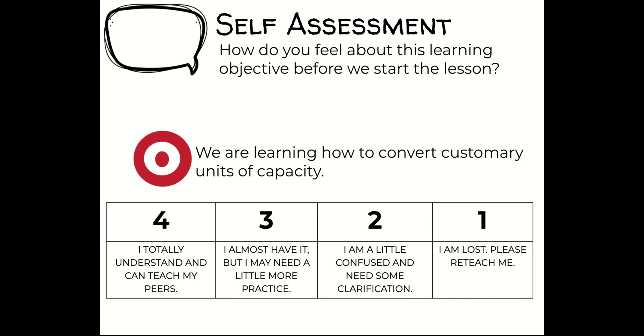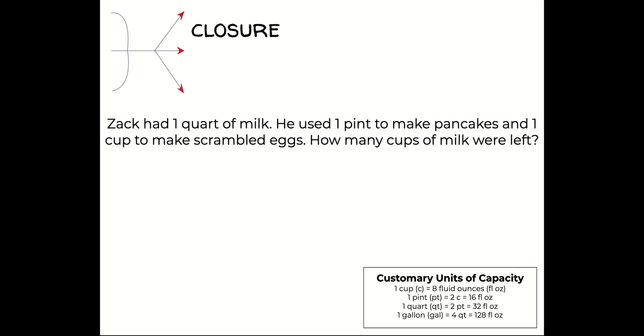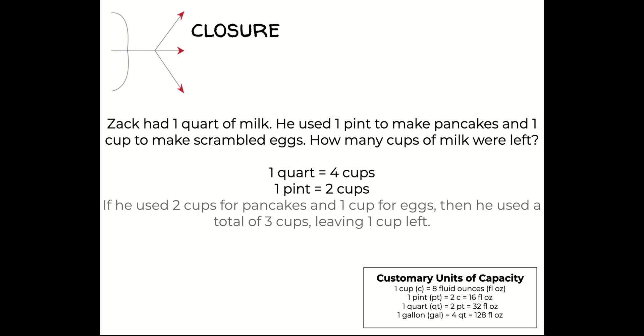Let's try this one before we close the lesson. Zack had one quart of milk. He used one pint to make pancakes and one cup to make scrambled eggs. How many cups of milk were left? Well, I know that one quart equals four cups. We had one quart of milk, which means four cups of milk. If you use one pint, which is two cups, to make pancakes and one cup for eggs, then he used a total of three cups, leaving one cup left.